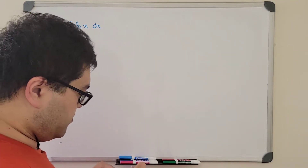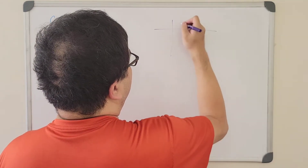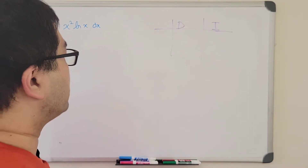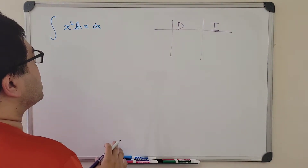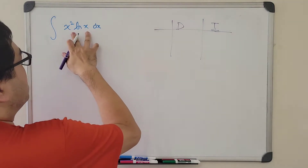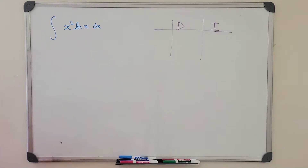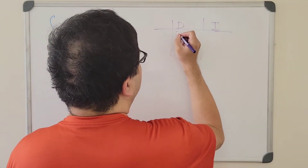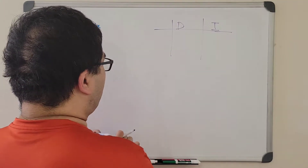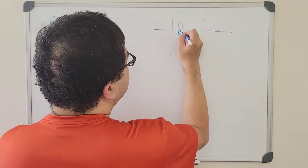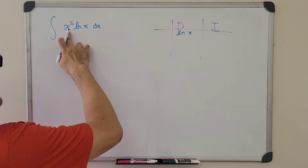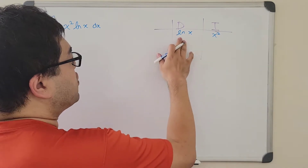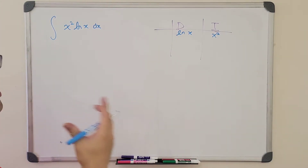This is what the integral by parts, or the DI method, sets up. D means that we're going to take the derivative, and I means that we're going to take the integral. We know that we don't have the antiderivative of ln of x, but we definitely do know the derivative of ln of x. So we're going to start off with ln of x in the D column, and then for x squared, we're going to put it in the I column.